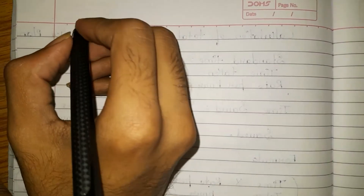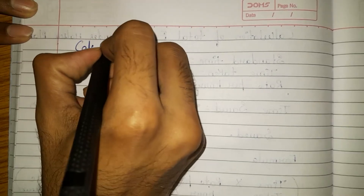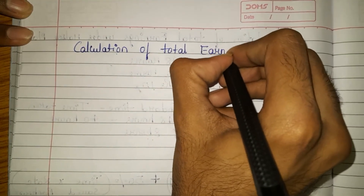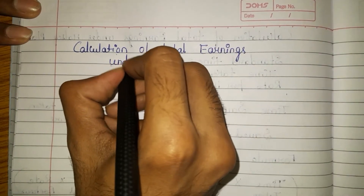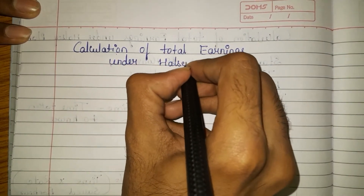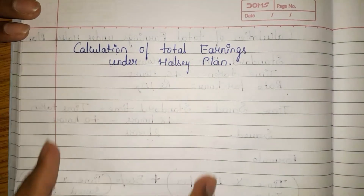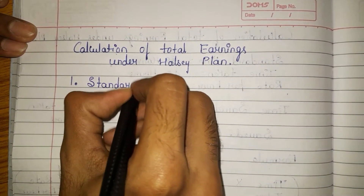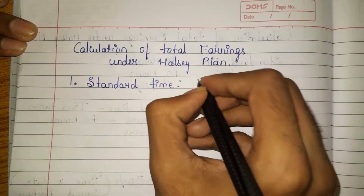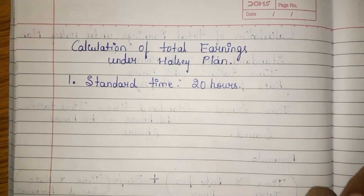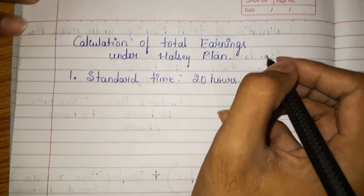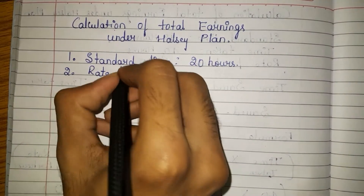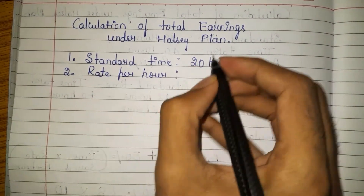Now, the first trick is to write down whatever they have given in the question. First, they have given standard time — how much is the standard time? 20 hours. Means he should finish that work within 20 hours. Next, rate per hour — how much is the rate per hour? Rate per hour is rupees 2.